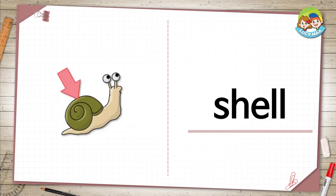Shell. A shell is a hard covering. In the picture, the arrow points to the snail's shell. What other animals have a shell?